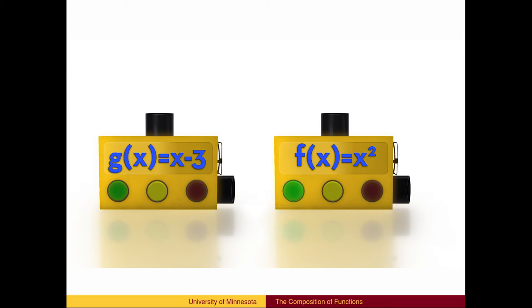In general, when an arbitrary input x goes into g, the output is x minus 3. The x minus 3 is then the input into f, which gets squared to produce the answer x minus 3 squared.